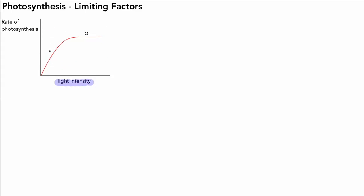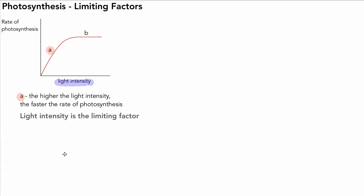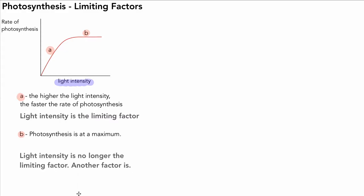Now let's look at these factors in detail. For the light intensity graph we can describe two regions, A and B. In region A, the higher the light intensity, the faster the rate of photosynthesis, because light intensity is the limiting factor. In region B, where the graph flattens out, photosynthesis is at a maximum rate and light intensity is no longer the limiting factor. Increasing light intensity further won't increase the rate — instead, CO2 concentration or temperature could be limiting.